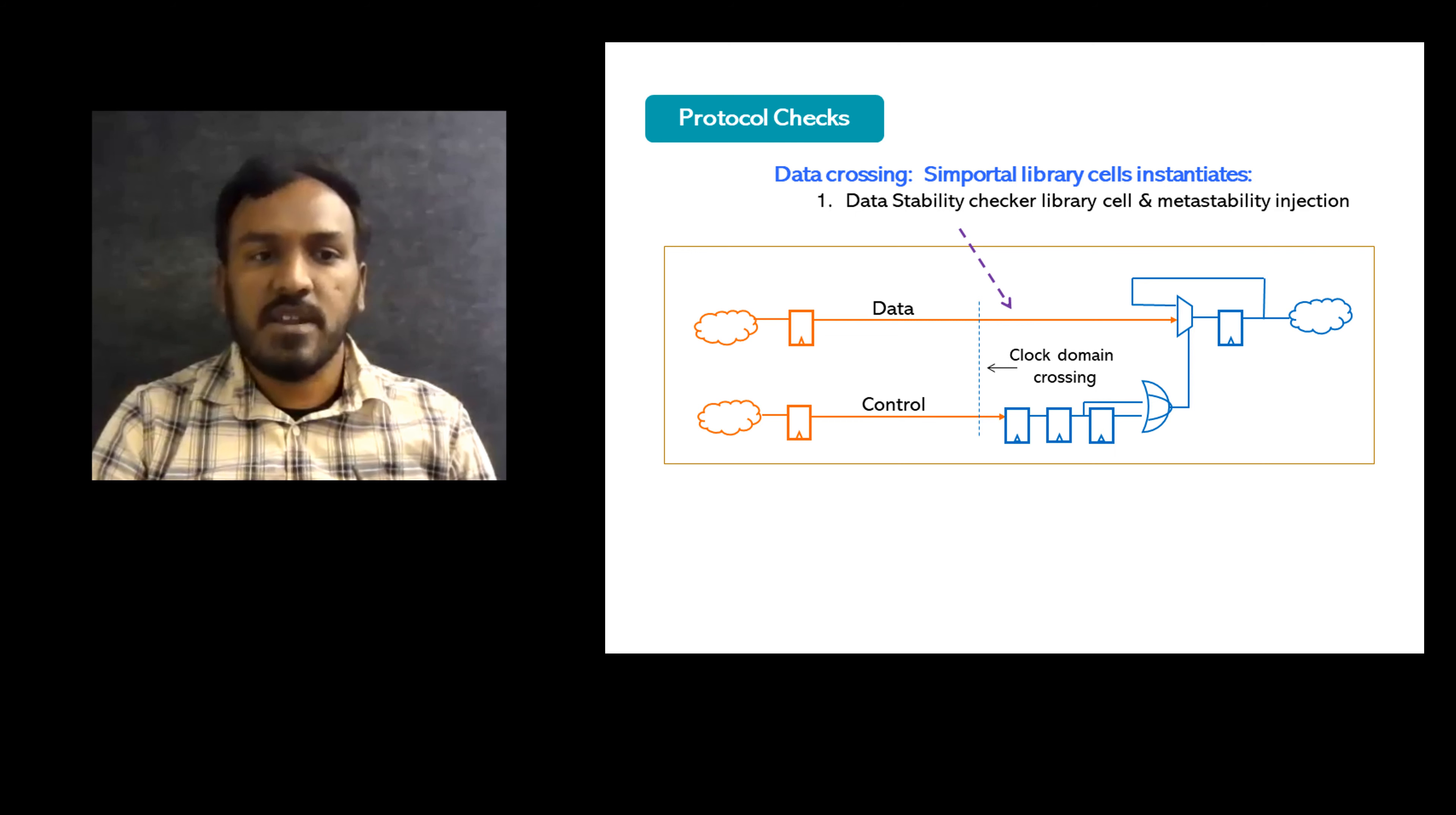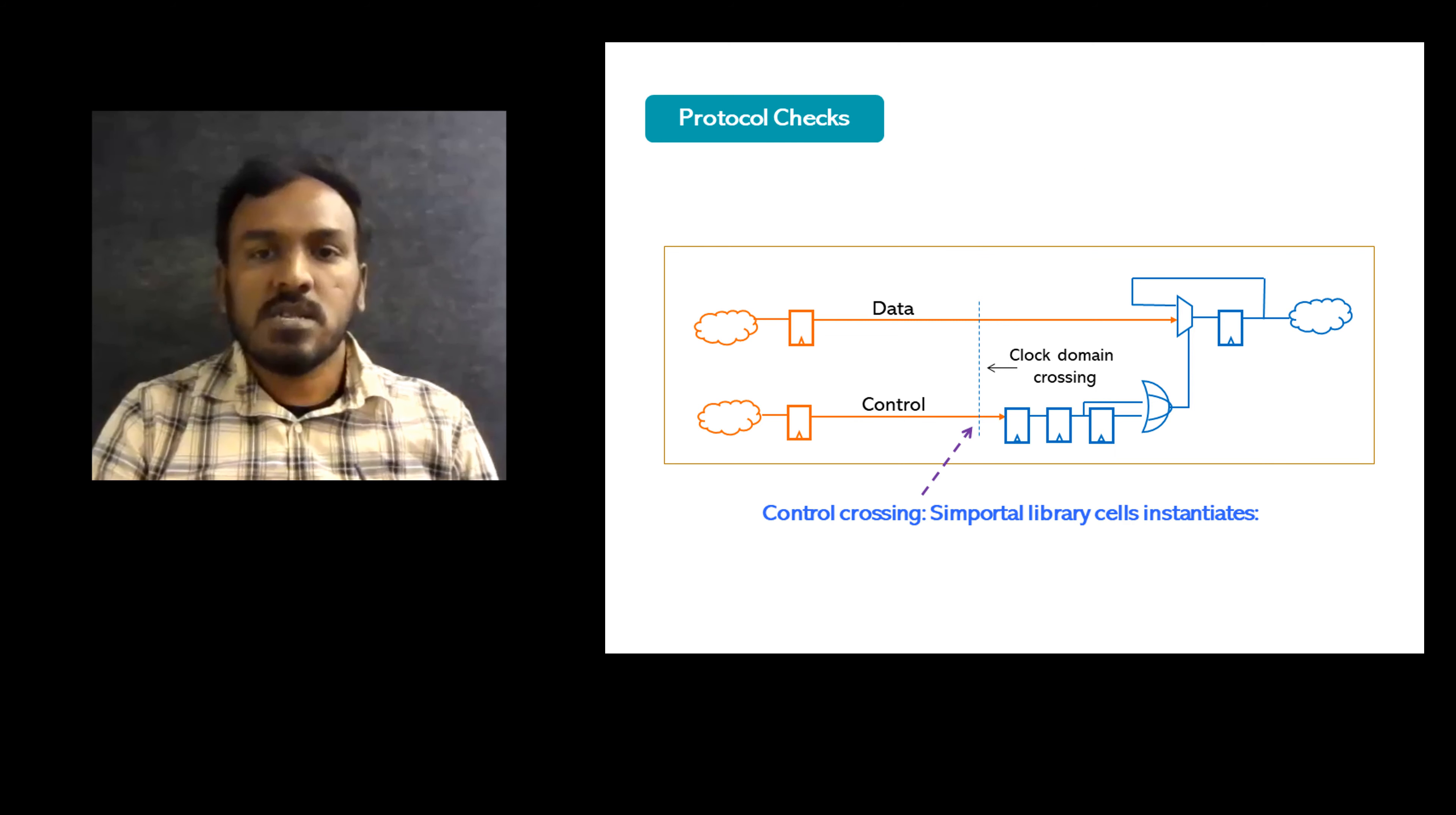For control crossings, the assertion checkers file has three elements. Metastability injection checks, which artificially introduce meta-stability into the design to see if the design is protected against it.